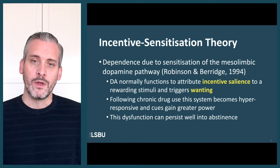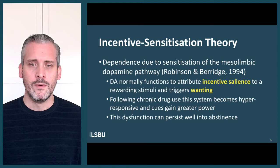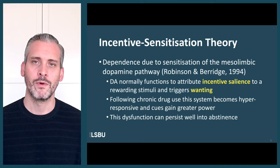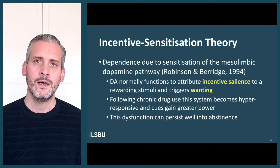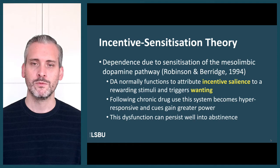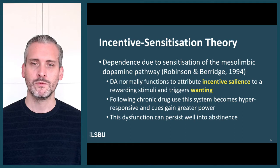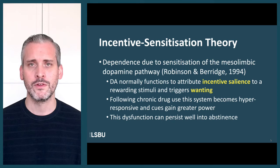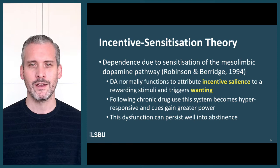The difficulty with drugs to which people become dependent is that they make this system hyper-responsive. The attribution of what Robinson and Berridge described as incentive salience is really important: the downstream impact of the release of dopamine is that cues associated with the behaviour trigger this wanting — this compulsive urge to engage in that behaviour again. Following chronic drug use, this hyper-responsiveness means the system gains greater power over your behaviour, and this dysfunction can persist well into abstinence. It builds up and grows over time.